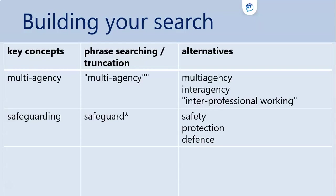For safeguarding, we could also search for safety, protection, or defence. Notice here that I have put a star or asterisk at the end of the term: safeguard*. The star is the truncation or stemming symbol and alerts the search engine to look for any words that start with 'safeguard.' So it would find safeguard, safeguards, safeguarding, safeguarded, etc.